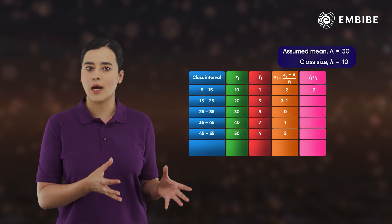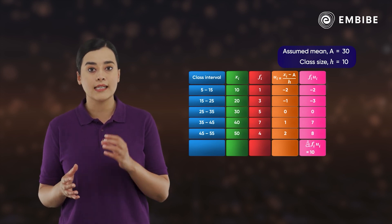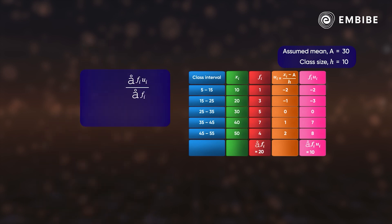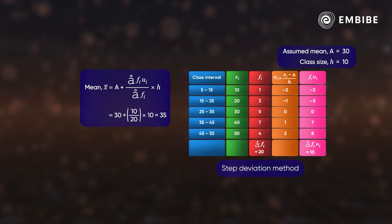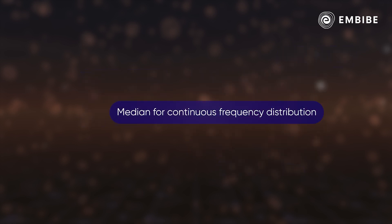Multiply these uᵢ's by the frequencies. The sum of fᵢuᵢ's is 10 and the sum of fᵢ's is 20. The obtained number is then multiplied by the class size 10, and the assumed mean 30 is added to nullify the effect of the operations. So the mean is 30 + (10/20) × 10, that is 35. This method is called the step deviation method.